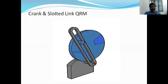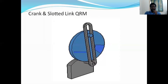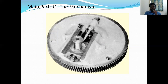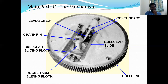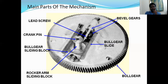The main parts of this mechanism are: bevel gears — which transfer motion perpendicularly from one shaft to another — bull gear, sliding block, crank pin, lead screw, slotted lever, walker arm, and the sliding block. These are the main parts of the crank and slotted lever mechanism.